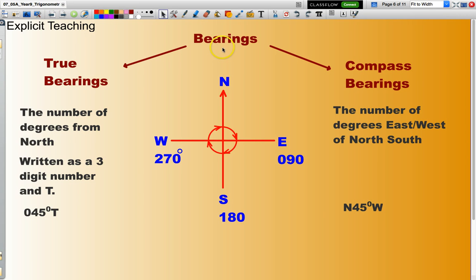Now, there are two types of bearings that we'll be looking at. The first one is a true bearing. It's basically the number of degrees from north. It is written as a three-digit number and has a T at the end of it. So, for instance, 045 degrees T is a true bearing.